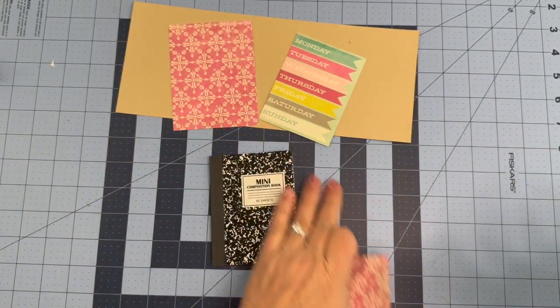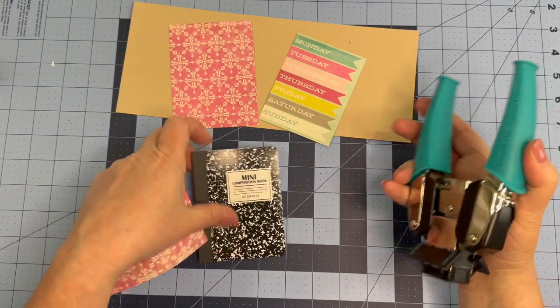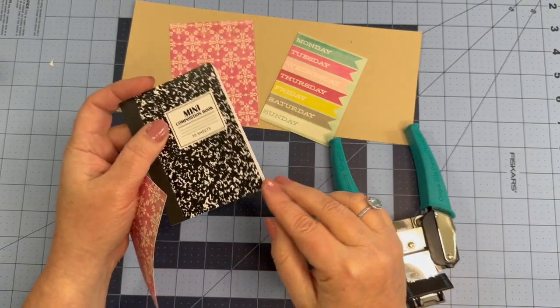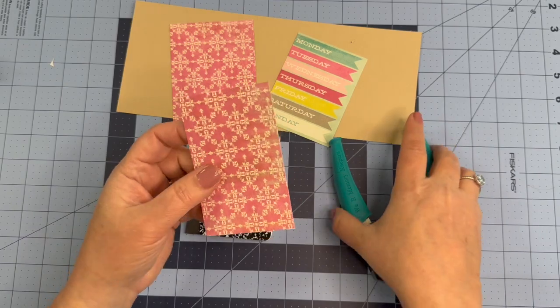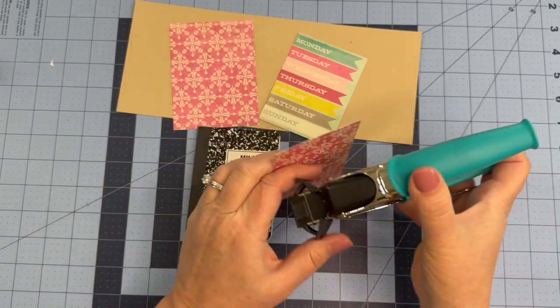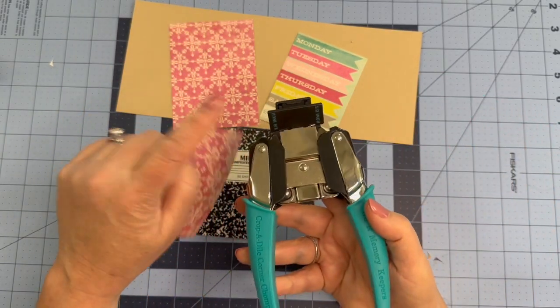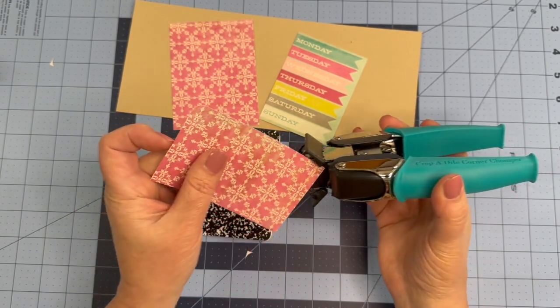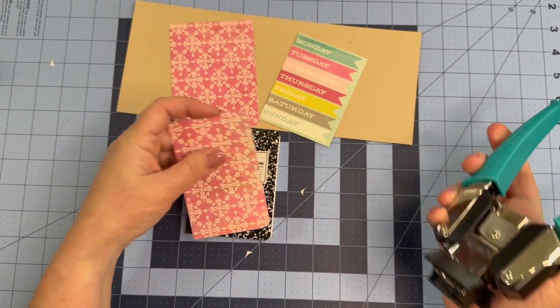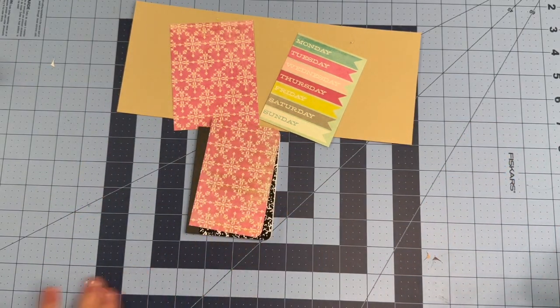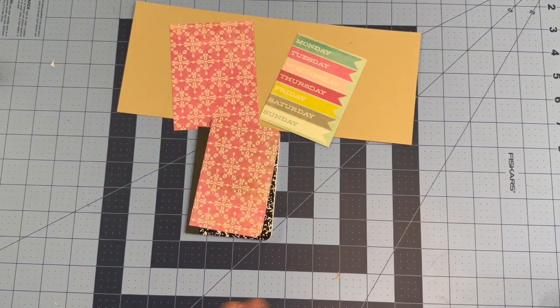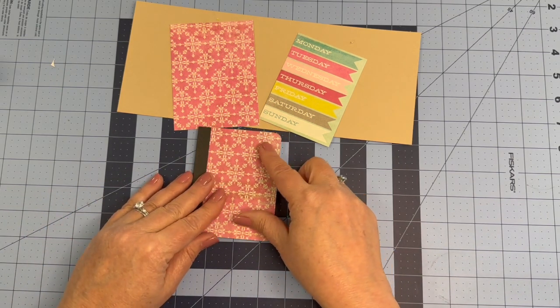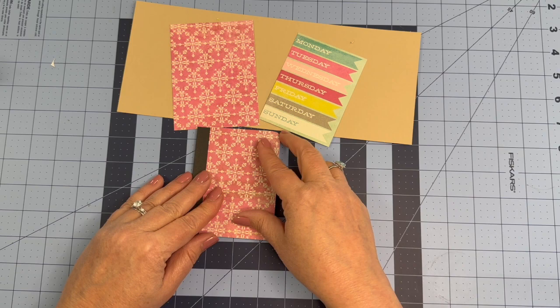The mini composition book has rounded corners on these two edges. So I want to go ahead and round these before I put it on. I'm going to use my quarter inch corner rounder and round the corners on two sides. And then I'm just going to fit that right here. Perfect.